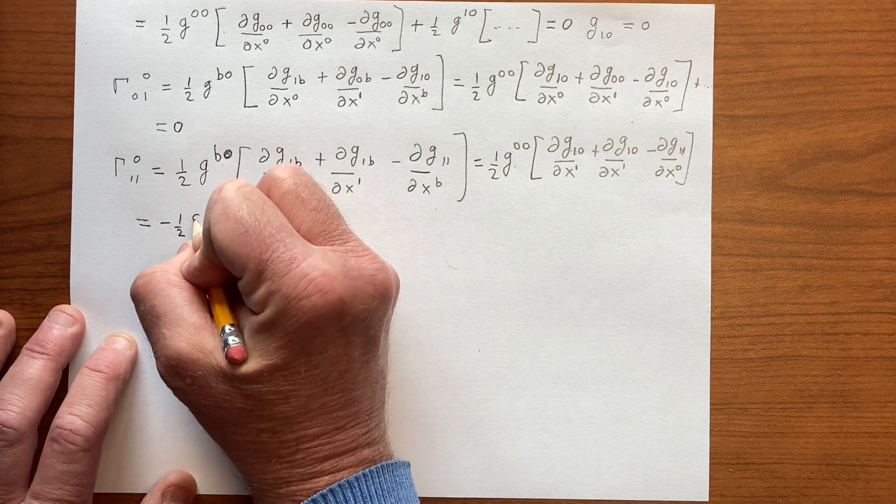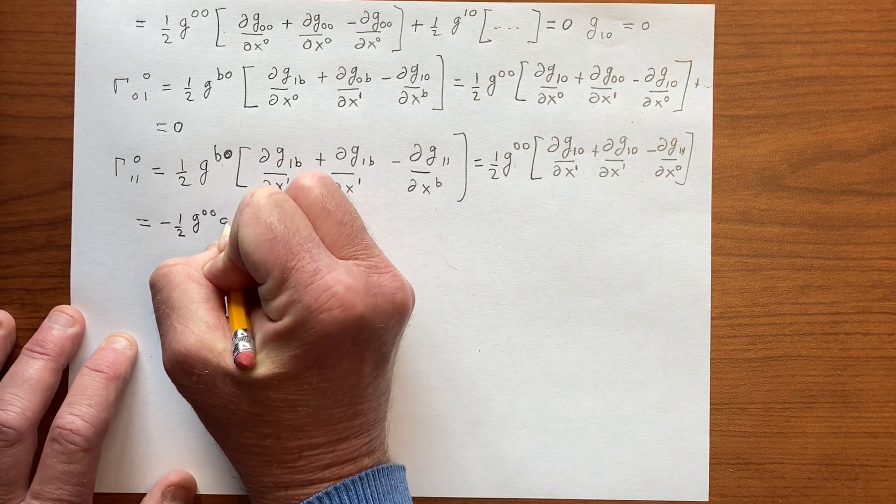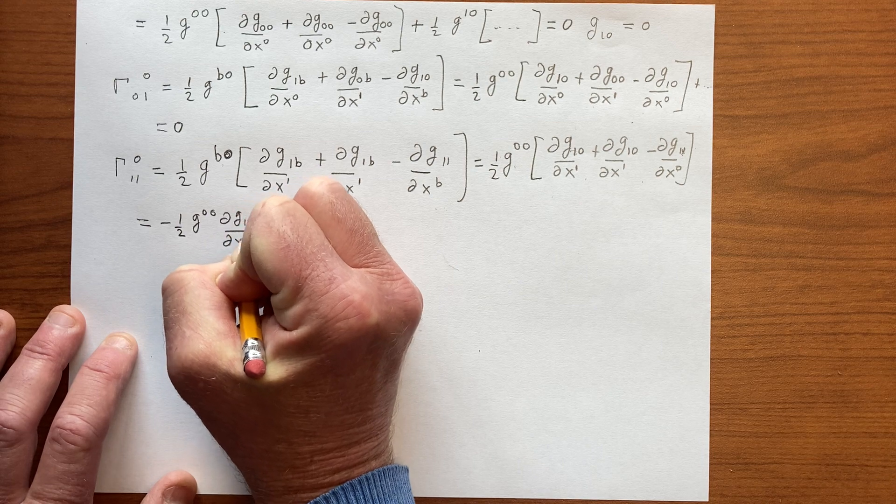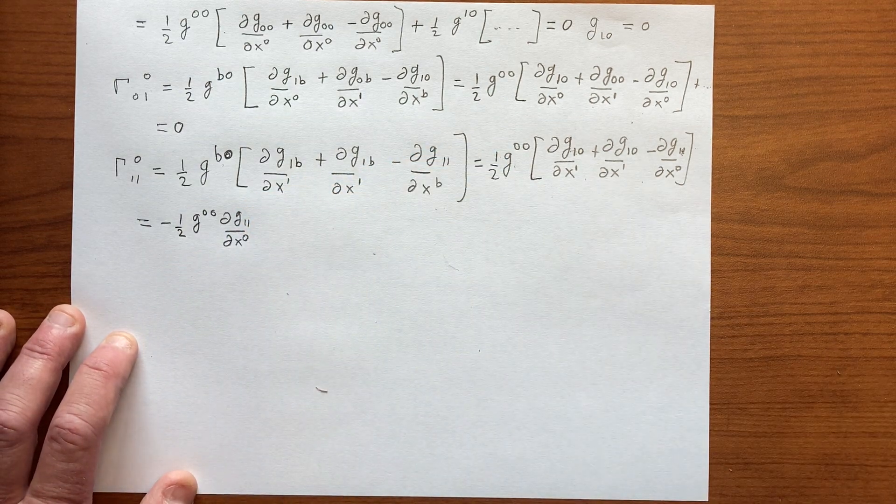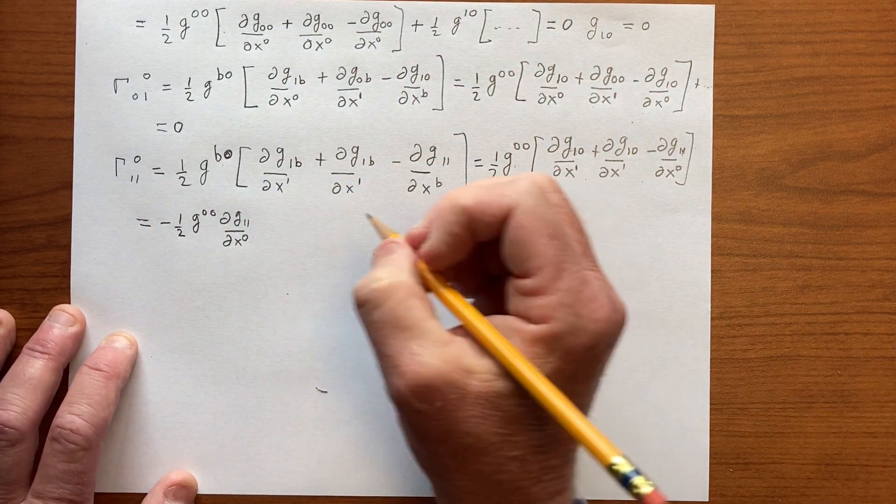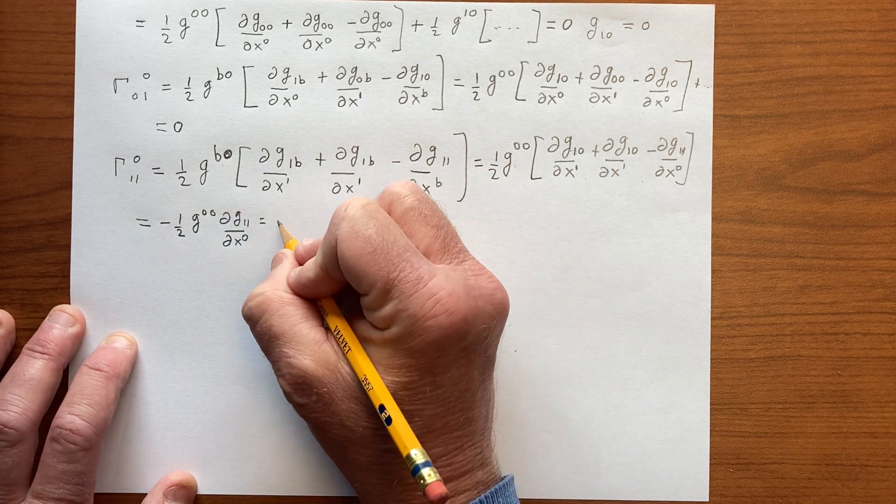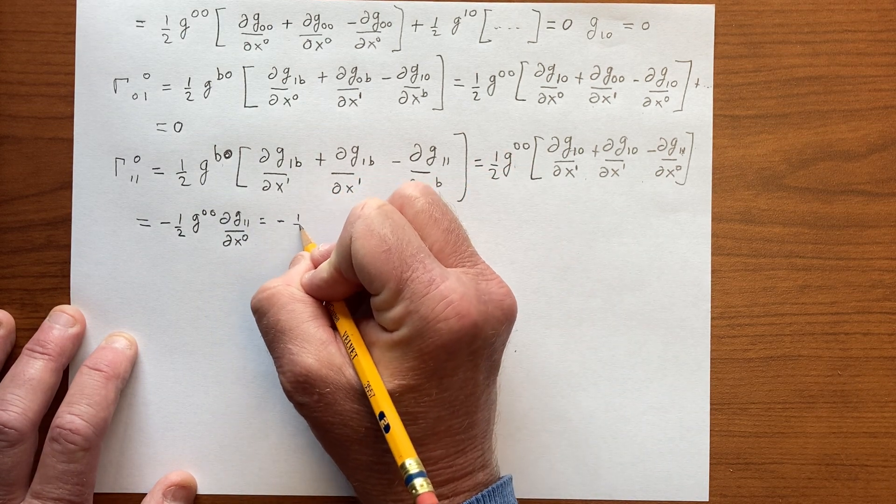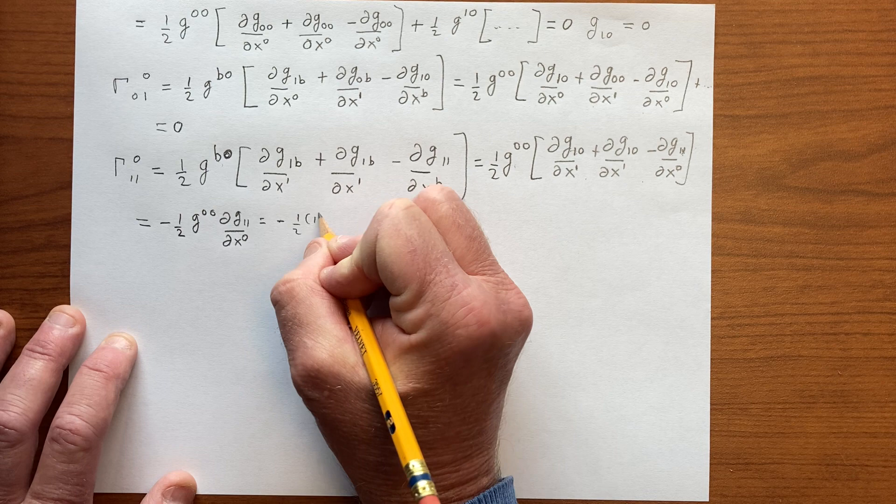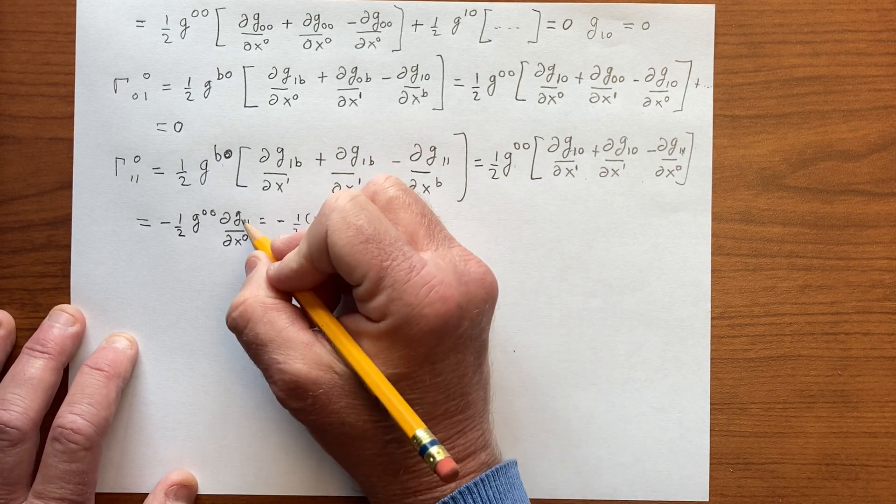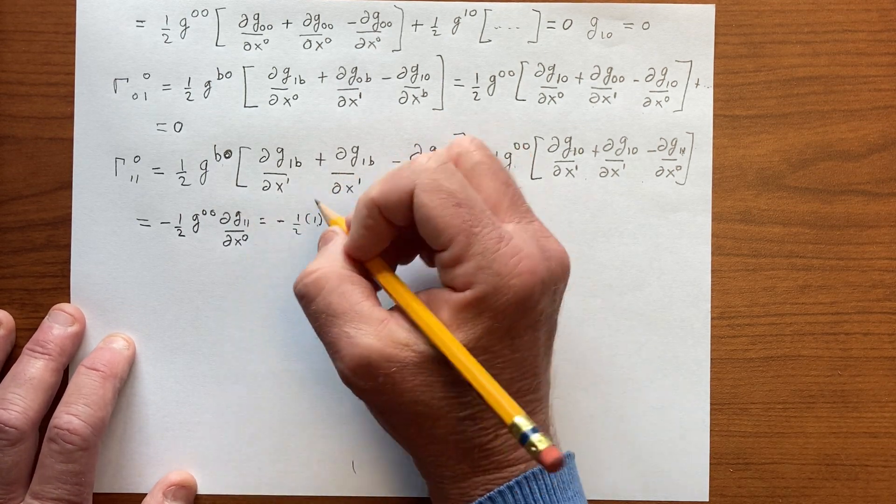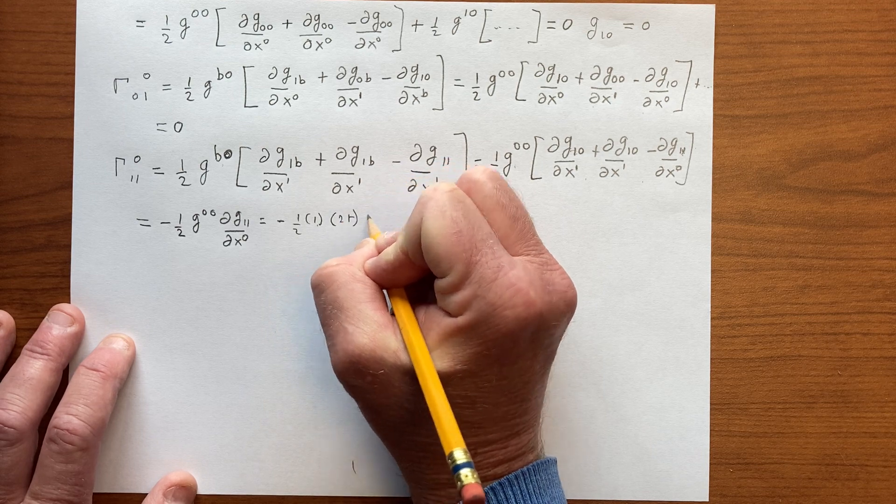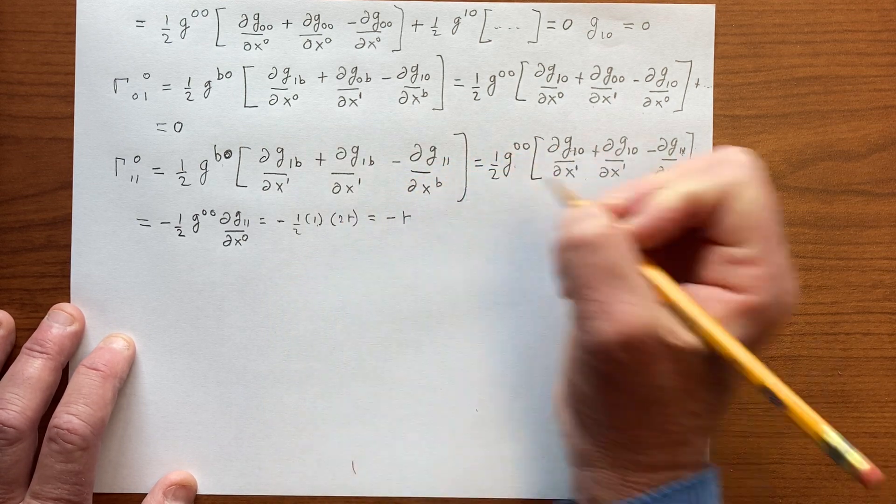So here we have minus a half derivative of r² with respect to r. So, well, let's just write this out. g^00 ∂g_11/∂x^0. And that is minus a half, so that's minus a half. g^00 is 1. Let's just write it out. ∂g_11/∂x^0 is 2r. And so we get minus r.